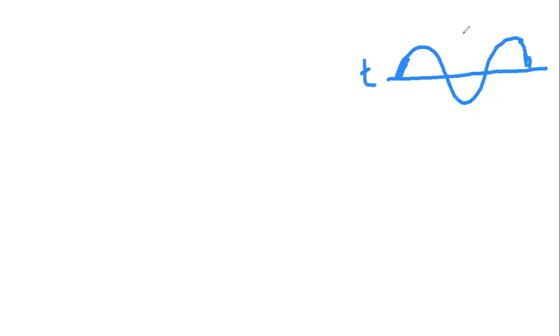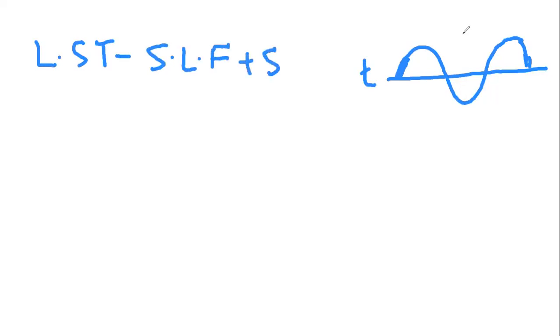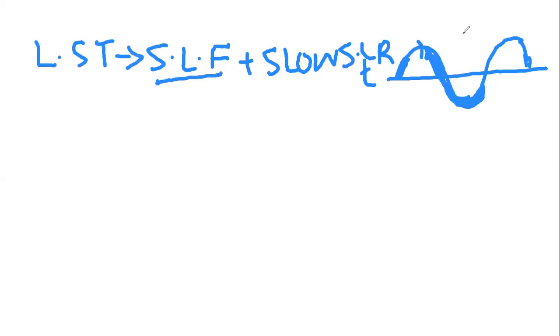How does a Low Stand System Tract form? Consider a sea level cycle with sea level rise and fall over time: there is rise, then fall, then rise again. The Low Stand System Tract forms during sea level fall and then during the relatively slow sea level rise phase — that interval within the sea level cycle is when Low Stand System Tract forms.